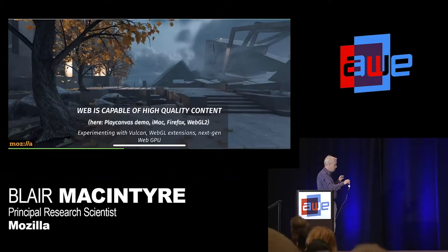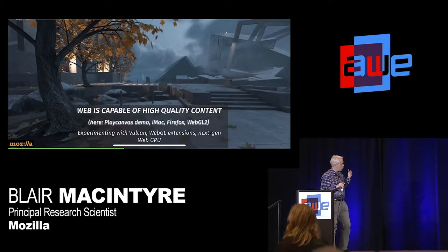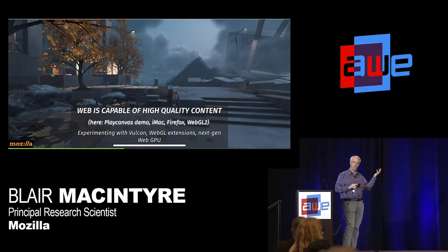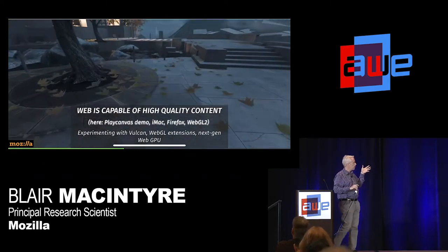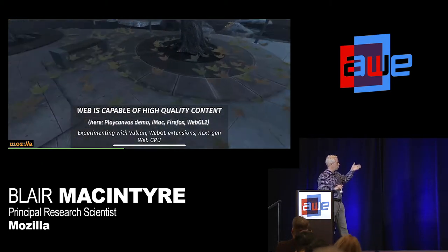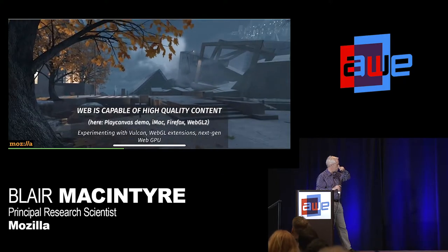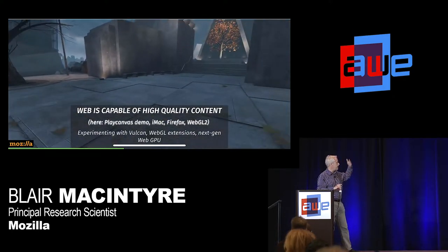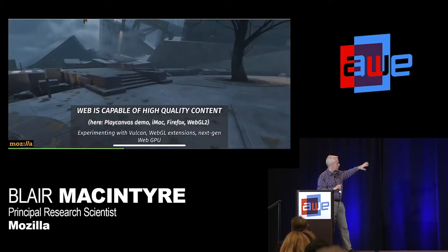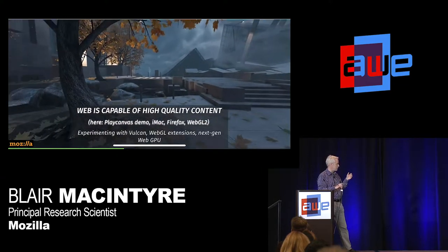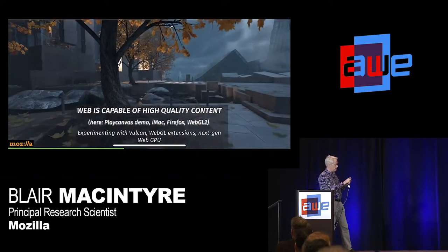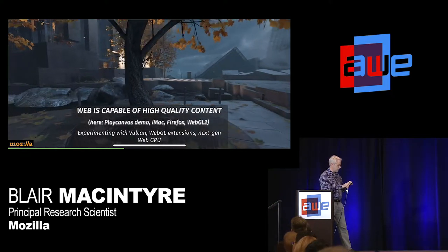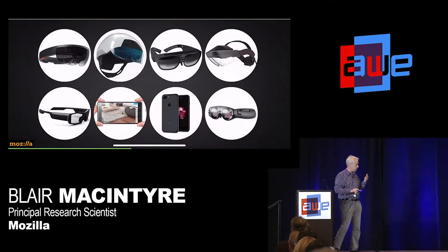One of the reasons this works is that the web is actually a lot better than you would imagine if you're not coming from the web. This is a WebGL 2 demo running on my Mac at home, and it has beautiful lighting effects. The stuttery frame rate is because it's an animated GIF, so it looks terrible. But you can get these beautiful lighting effects that you would imagine from things like Unity.